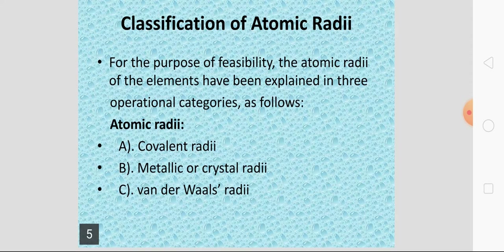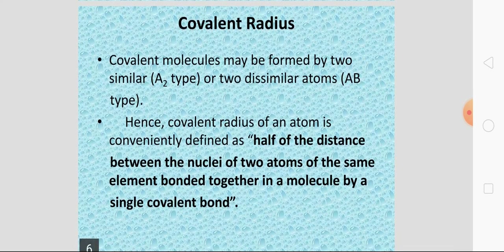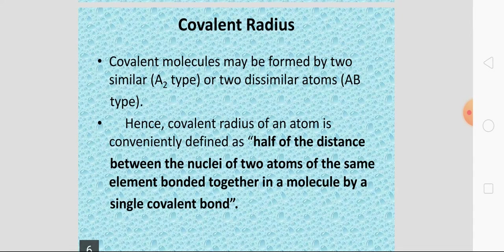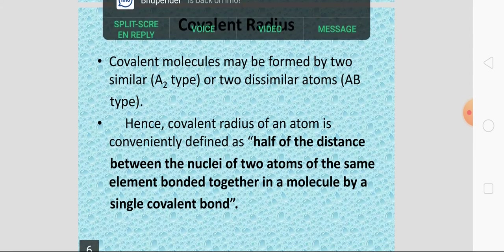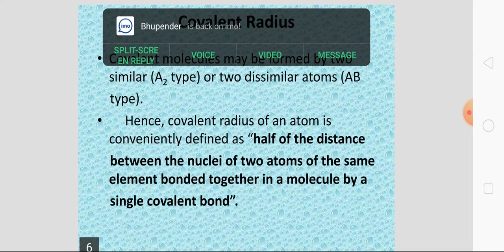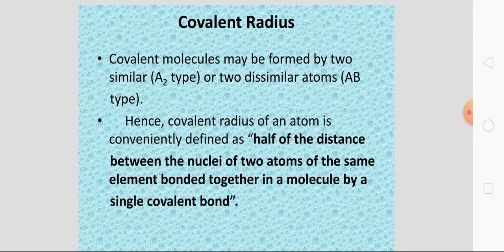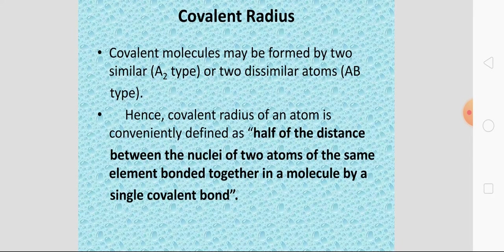Covalent radius is calculated in the case where covalent bond formation occurs between molecules. For an A2 type molecule where both atoms are the same size, covalent radius of an atom is defined as half of the distance between the nuclei of two atoms of the same element bonded together in a molecule by a single covalent bond.